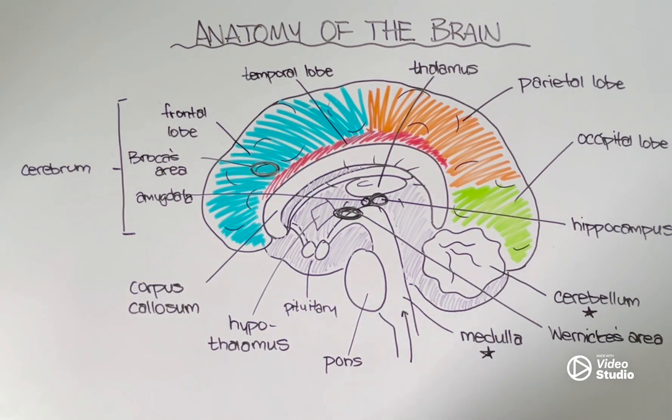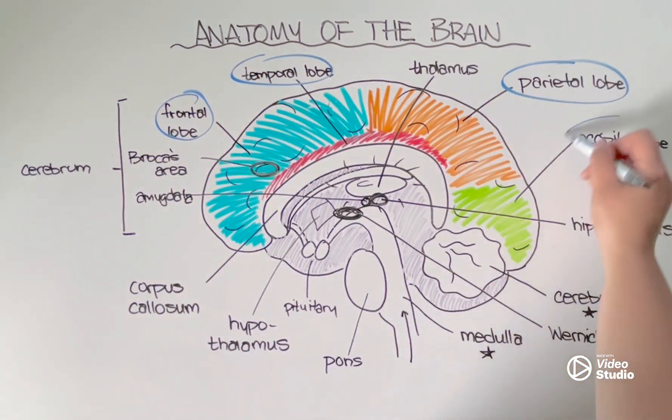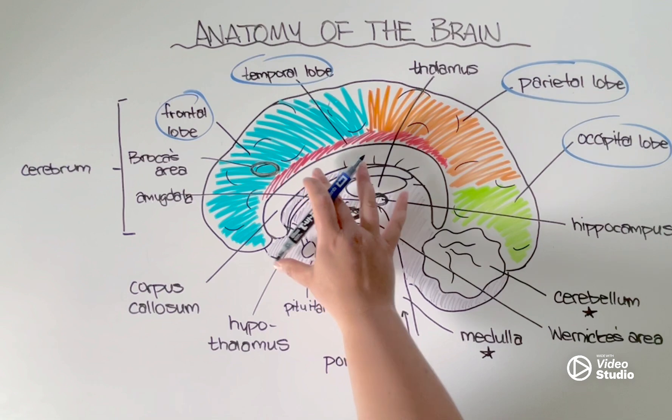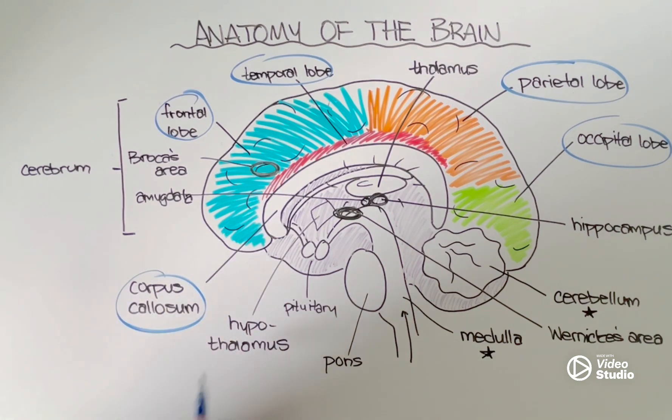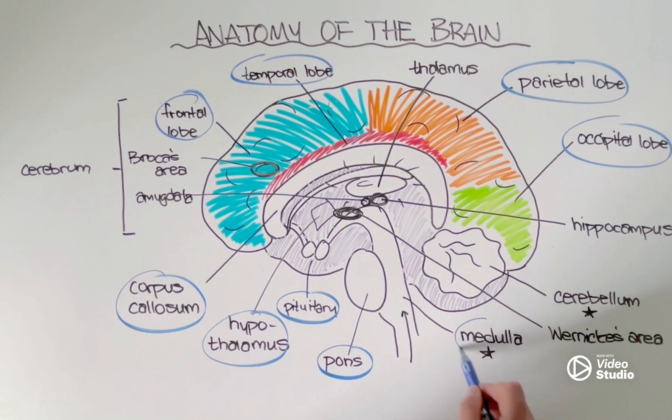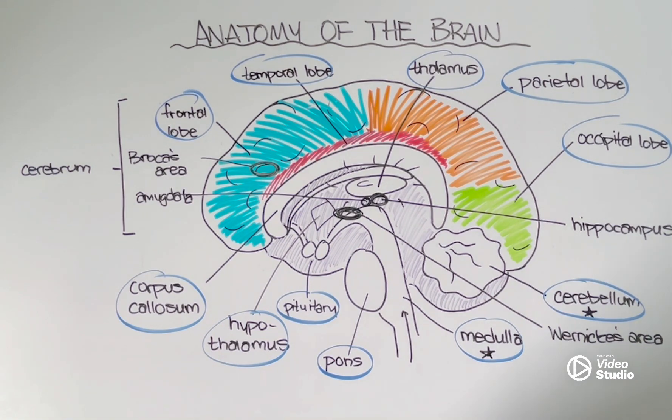And so those are the structures of the brain. The ones that you will actually be asked to label, maybe on a test or a quiz, these are the different lobes of the cerebrum, as well as some of these structures that are kind of embedded a little bit deeper in the brain. So you should be able to label the corpus callosum, the hypothalamus, the pituitary, the pons, the medulla, the cerebellum, and, of course, the thalamus. Thanks, everyone.